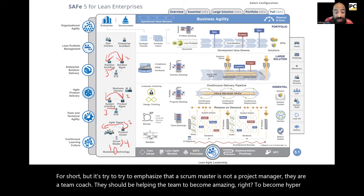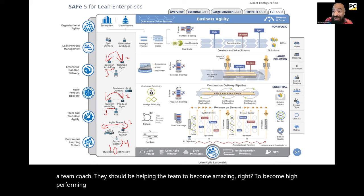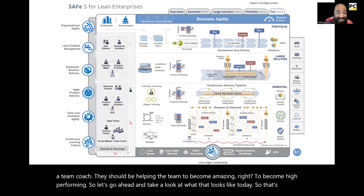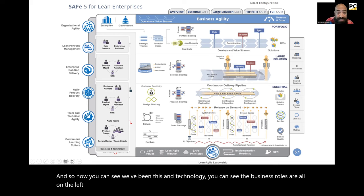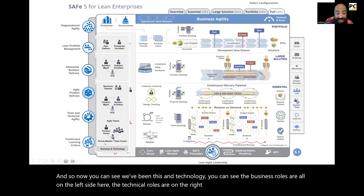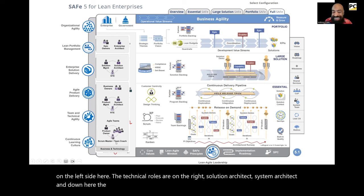So let's go ahead and take a look at what that looks like today. Now you can see 'business and technology,' the business roles are all on the left side, the technical roles are on the right — solution architect, system architect — and down here, the SMTC. Those are the changes in the roles.